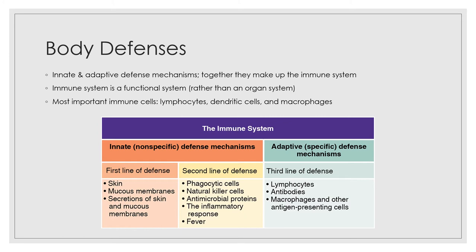Your innate, nonspecific defense mechanisms are your first and second lines of defense. The first line includes things like skin and mucous membranes and their secretions, which have bacteriocidal properties. The second line of defense includes phagocytic cells, natural killer cells, antimicrobial proteins, the inflammatory response, and fever. The third line of defense — adaptive specific defense mechanisms — involves lymphocytes, antibodies, macrophages, and other antigen-presenting cells.